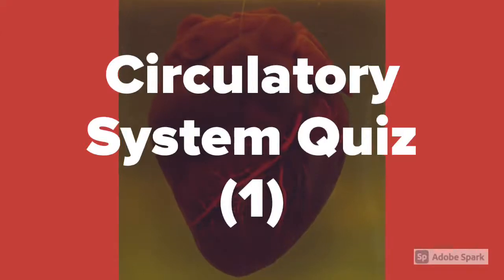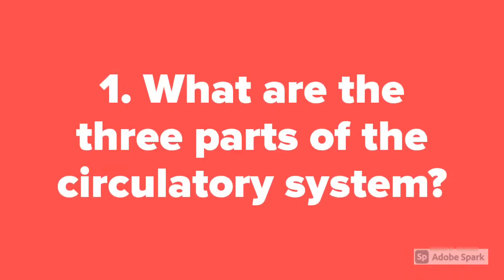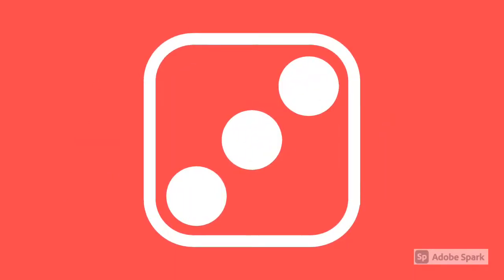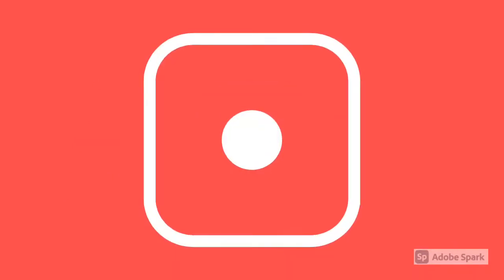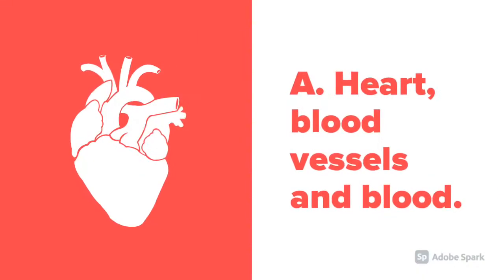Circulatory System Quiz. Part 1, Question 1. What are the three parts of the circulatory system? The answer is heart, blood vessels, and blood.